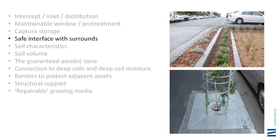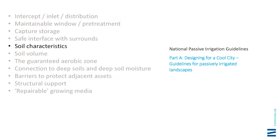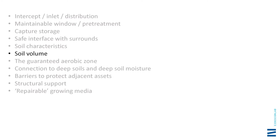The rest of the checklist I'll move through quickly since there are guidelines out there that can help. Things about the safe interface with surrounds — City of Kingston and Port Phillip have developed their own standards, and these are appearing in some guidelines. Soil characteristics: various resources will guide you toward good tree mixes, and there's a new guideline coming out that E2 helped with — a specification for tree media done by proper soil scientists. Soil volume we talked about. The guaranteed aerobic zone and the connection to deep soils and deep soil moisture — we've covered that. Many ways to deliver it. How are you incorporating these things into your design?